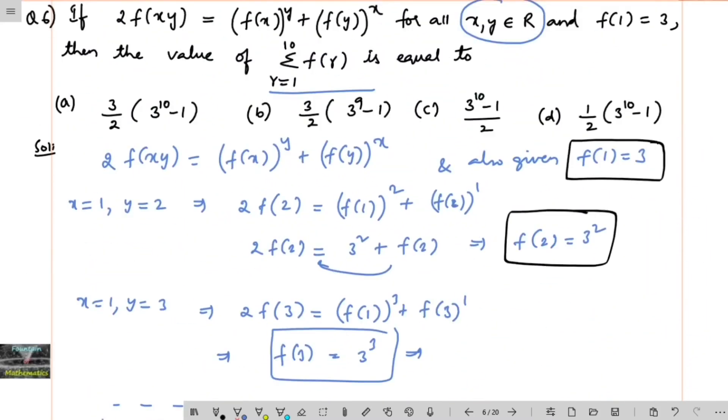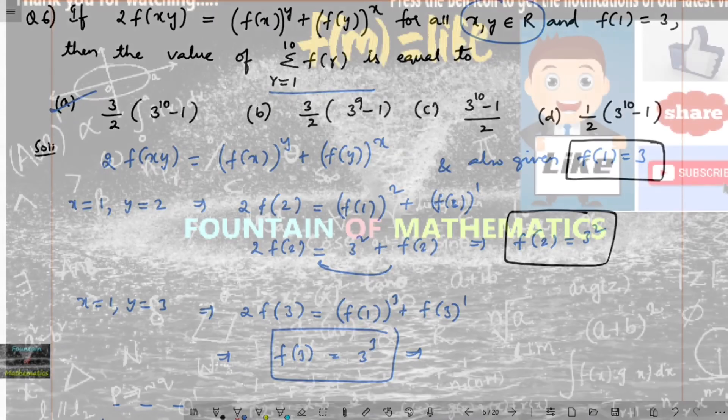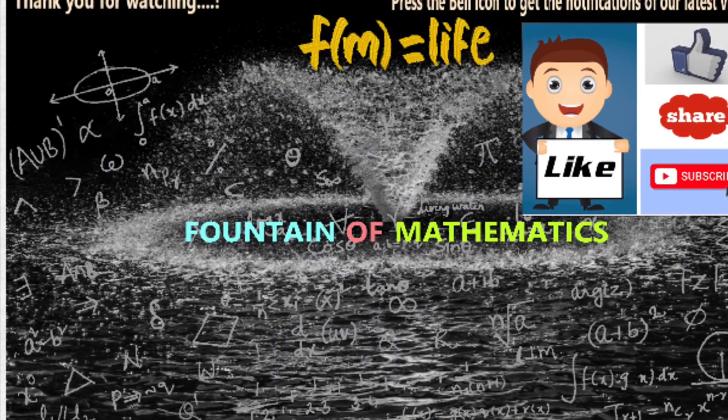So the answer is 3 upon 2 times of 3 to the power of 10 minus 1. I think you can go with option A.